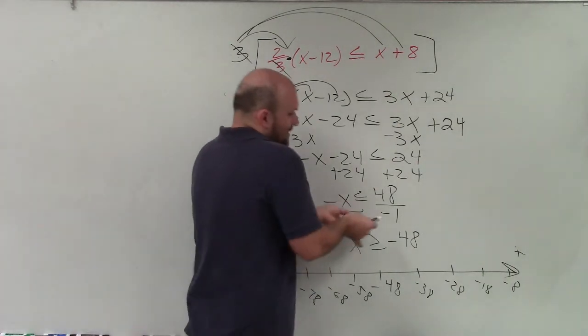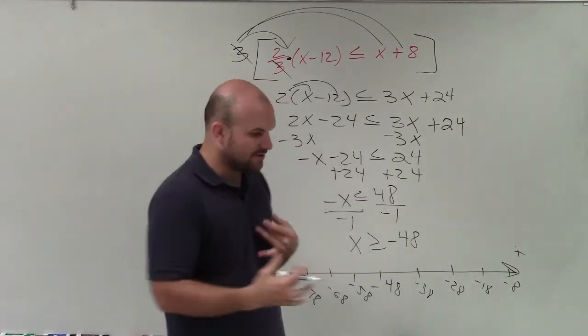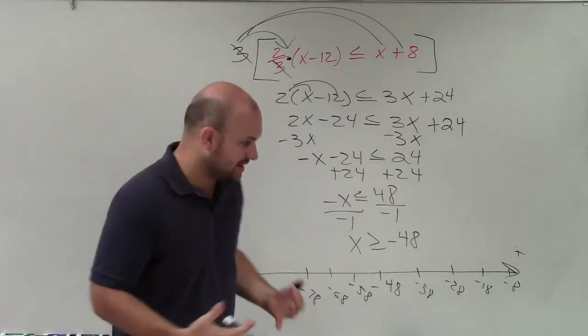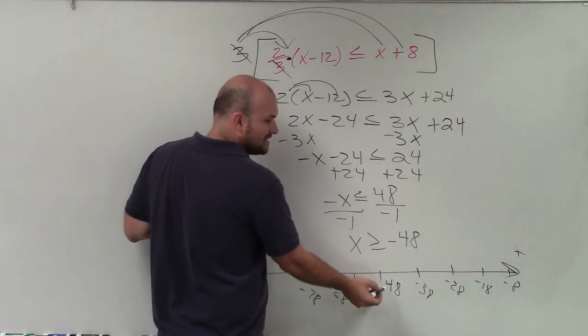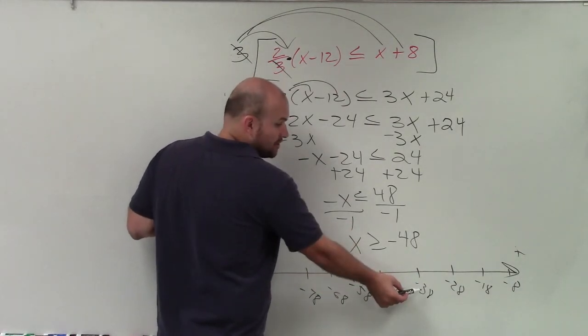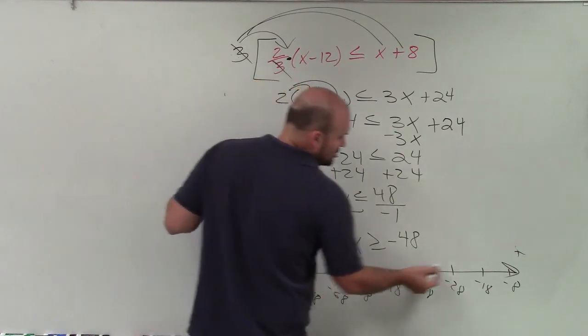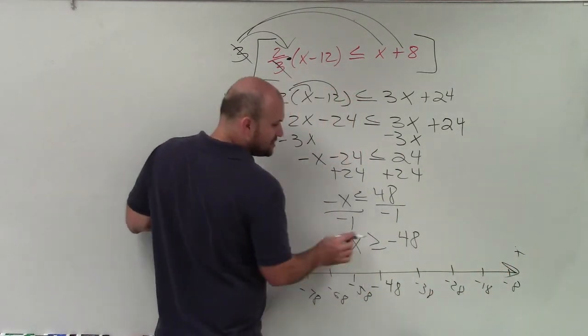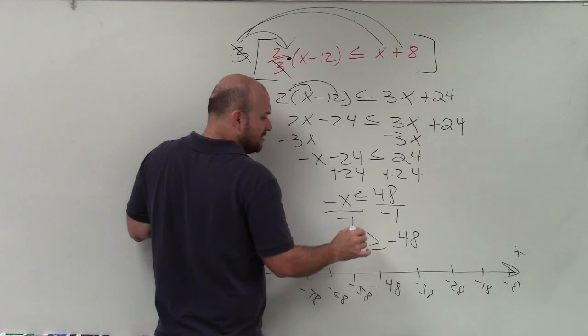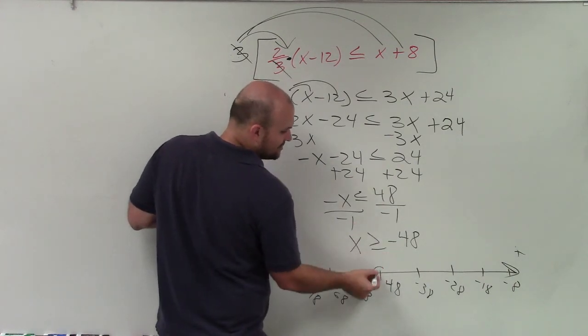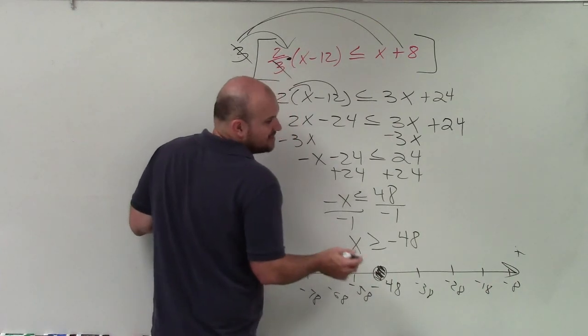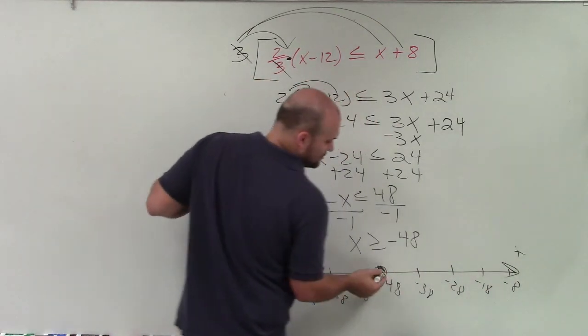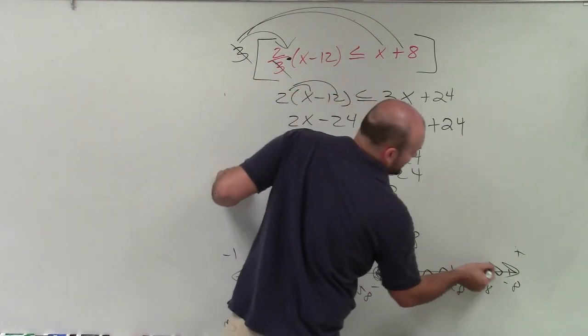And this says x is greater than or equal to negative 48. So whenever I'm thinking of negative, I always think of like owing money. So how much money do you have? Do you have more money if you owe negative $48 or if you owe $38? Well, obviously you have more money if you only owe somebody $38. So the larger numbers are going to the right. So it says x is greater than or equal to negative 48. So since it's equal to, I shade this in. And then all the values that are greater than are going to be the ones that are going towards the positive. So I shade to the right.